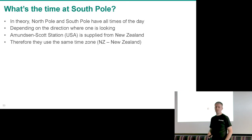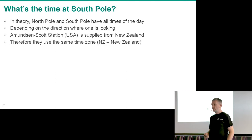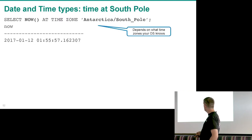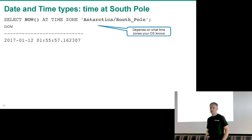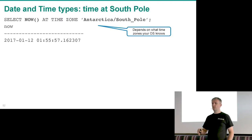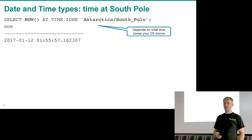Coming back to the South Pole question: there's a station at the South Pole called Scott-Amundsen Station, belonging to the United States but supplied from New Zealand, so for logistic reasons they use the New Zealand time zone. In fact, every station on the Antarctic continent has its own time zone — US, German, Russian, UK stations each use a different one. So there are about 11 different time zones on Antarctica.